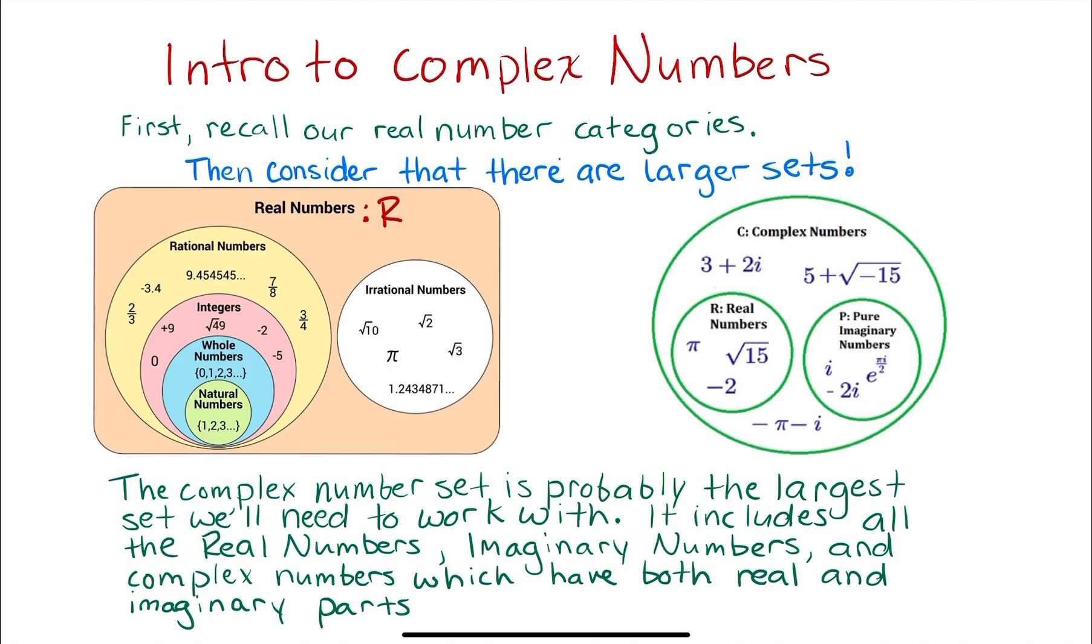And so our math would break down if we didn't come up with a way of expanding it to include those numbers. So what we get is the complex number set that includes real numbers and imaginary numbers. This complex number set is probably the largest set we'll ever need to work with. It includes all the real numbers, all the imaginary numbers, and of course the complex numbers which will have both real and imaginary parts.